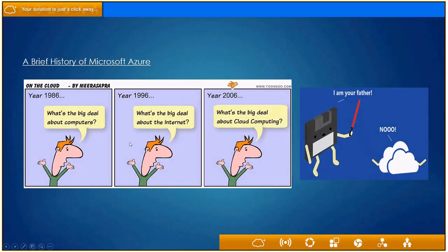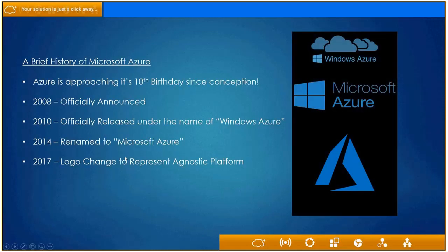Looking at the history of Azure: back in 1986, we wondered what the big deal was about computers. In 1996, it was the Internet. And a little more than 10 years ago, it was cloud computing. Azure is actually approaching its 10th birthday. In 2008, it was officially announced as Windows Azure — back then it was largely just a directory service for users to log on to and establish identities. It wasn't until 2010 when it was officially renamed Windows Azure that the platform really took shape.